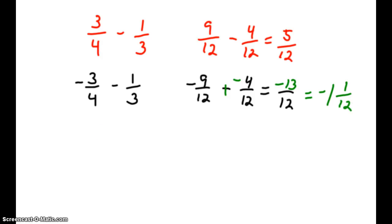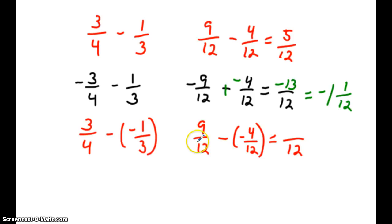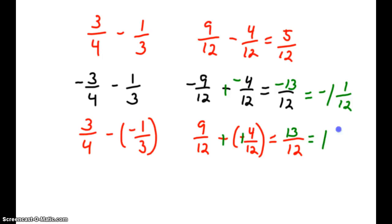Let's see what happens when we take 3 fourths and subtract a negative 1 third. We'll still have 9 twelfths as a positive. We're going to be subtracting a negative 4 twelfths. The denominator stays the same, and according to our integer rule — we add the opposite — this will become positive 13 twelfths, and our answer would be a positive 1 and 1 twelfth.